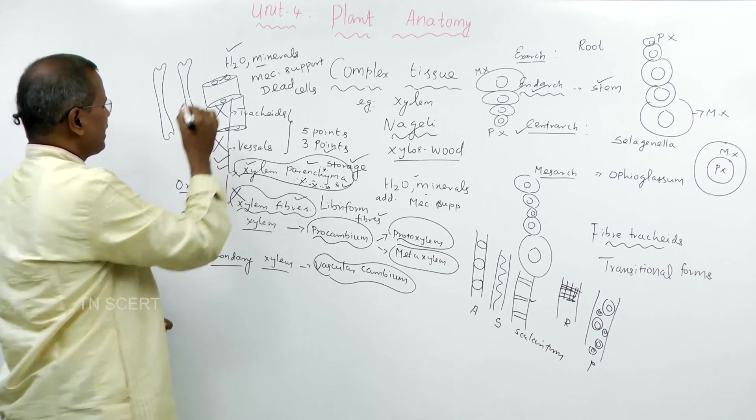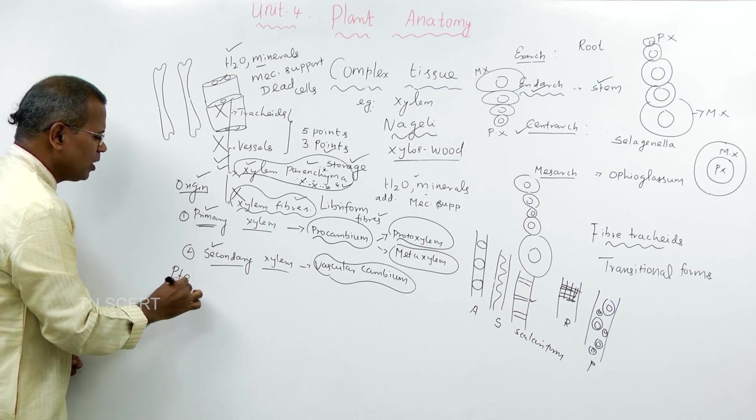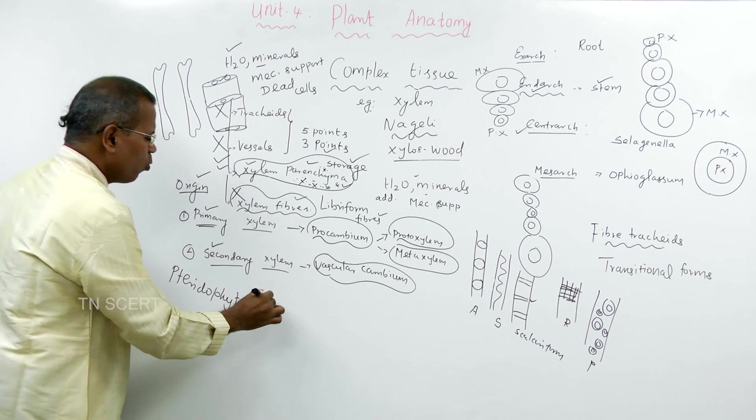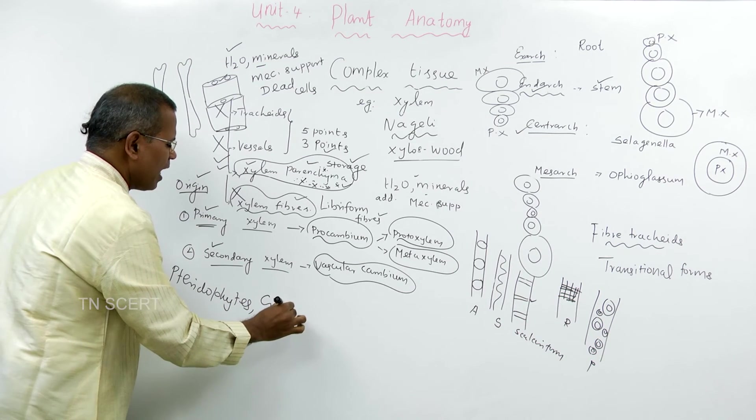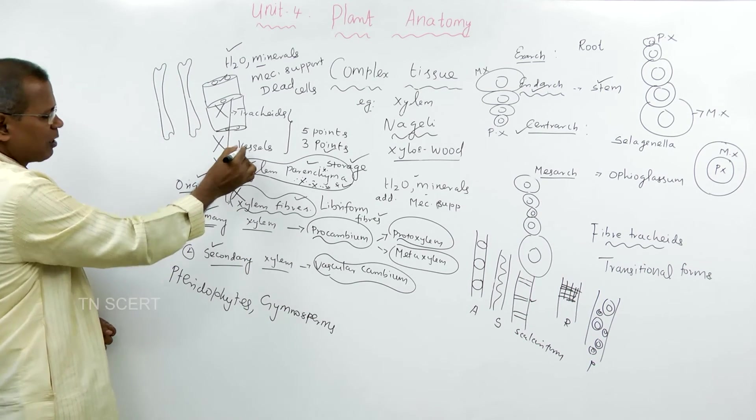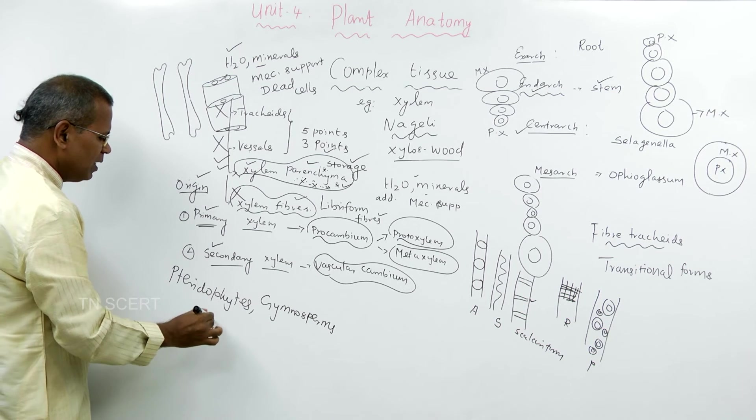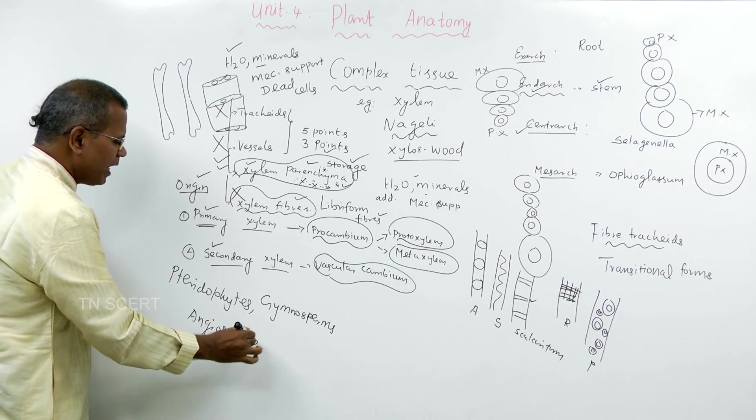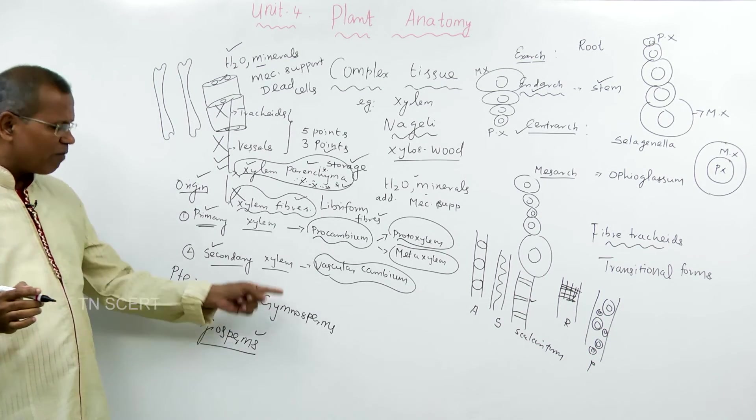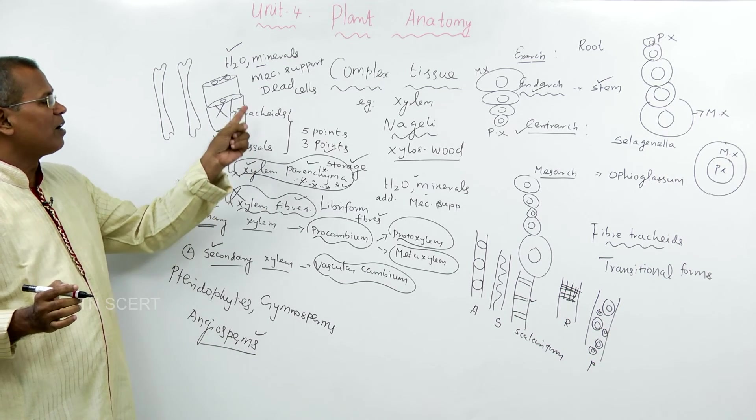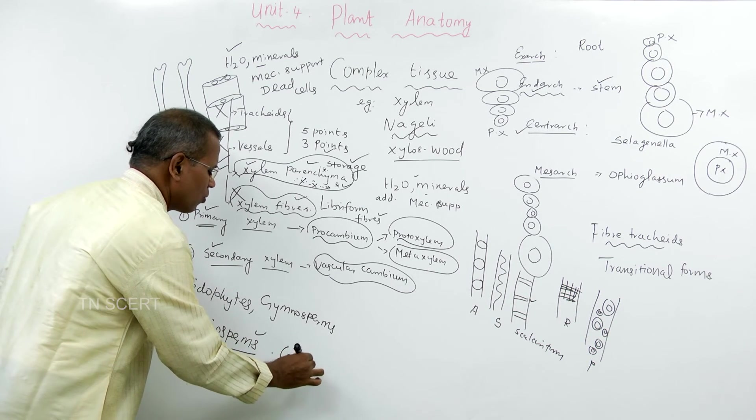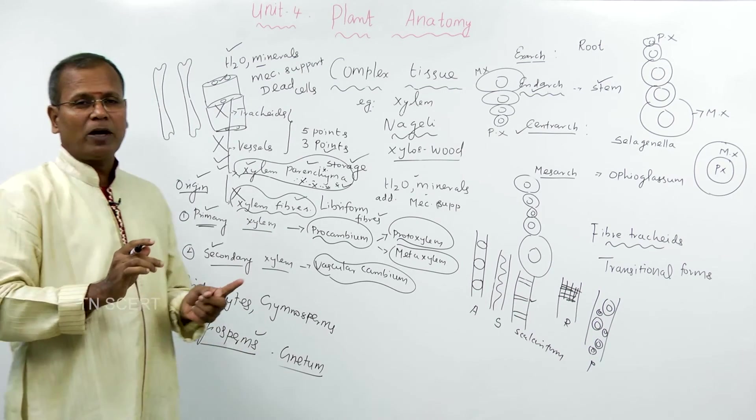Tracheids are the water conducting elements of pteridophytes and gymnosperms. Vessels are the water conducting elements of angiosperms. Absent in pteridophytes and gymnosperms. But it is very good difference.